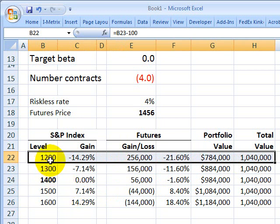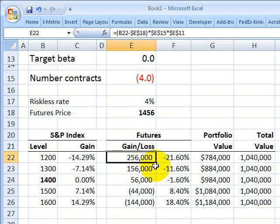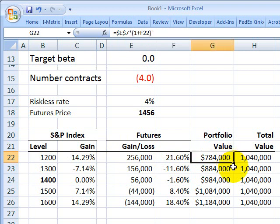Under this scenario, we shorted four futures contracts. We would profit on the futures contracts to the tune of $256,000. But the S&P index goes down. Our portfolio has that beta of 1.4. We're going to assume that relationship will be maintained. So our portfolio is going to drop as well.